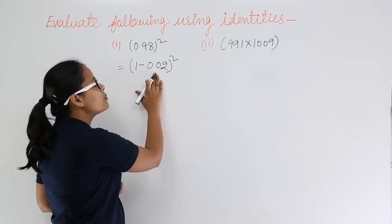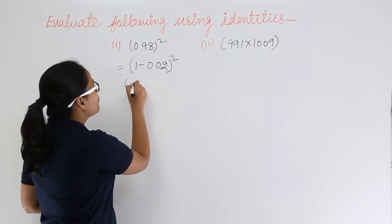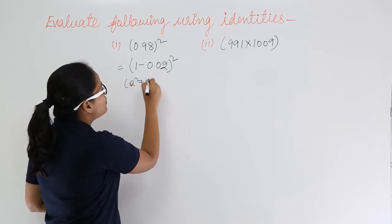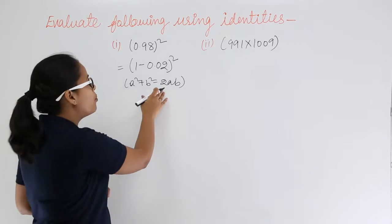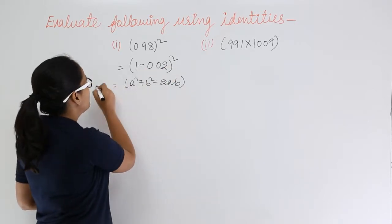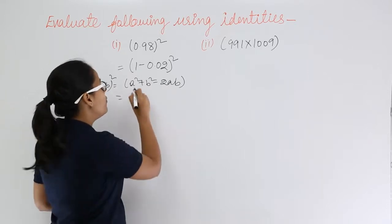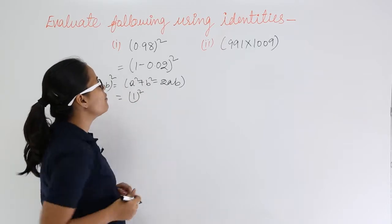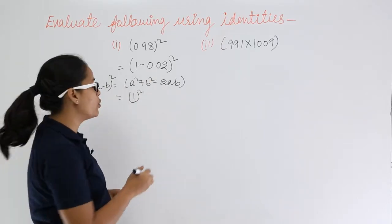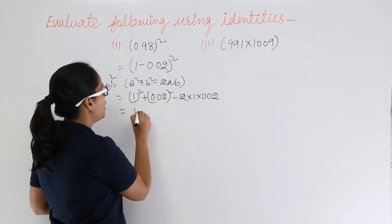Now this is a minus b whole square identity whose formula will be a square plus b square minus 2ab. So let's apply this formula here on this expression. You will be getting value for a, replace this value for a as 1, replace the value of b with 0.02. Now solve this further you will be getting 1 plus.